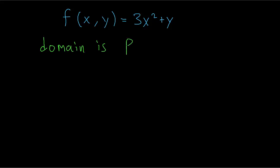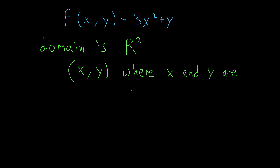The domain of this function is the set of all pairs of real numbers, and we call that R². R² is just the set which contains every pair of real numbers — for example, (3,5), (2,4), (-1,7). They are all pairs of real numbers in this set R².